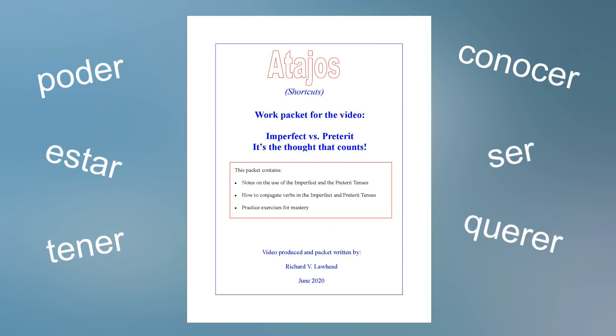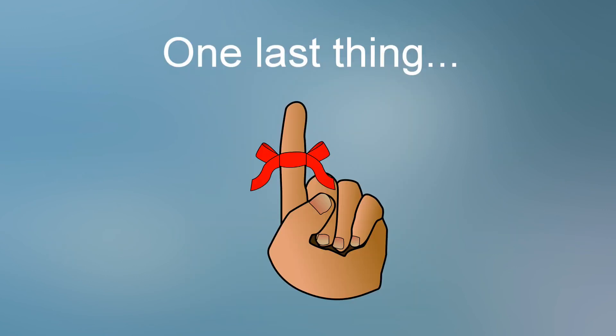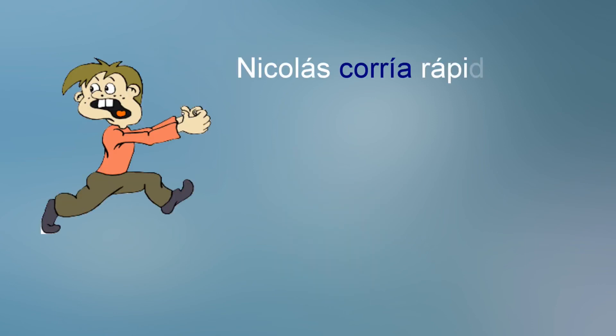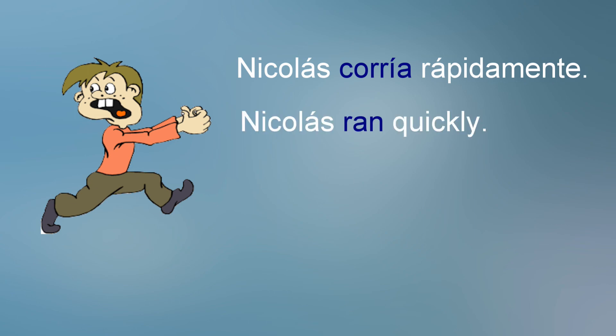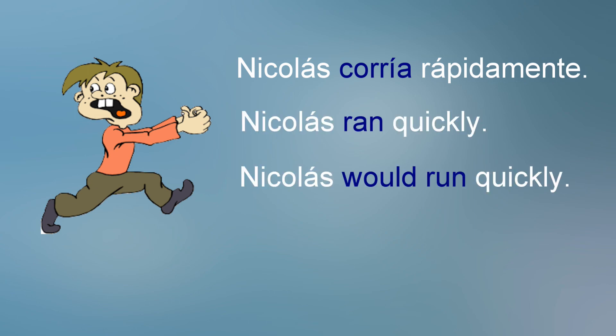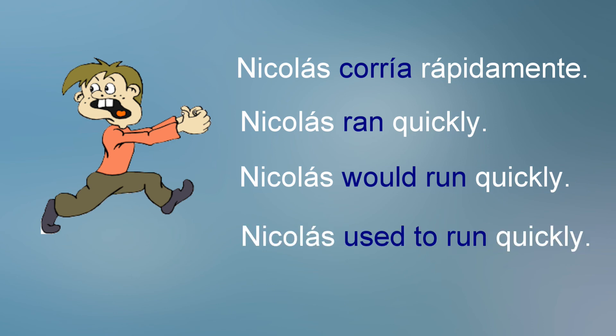One last thing. We saw earlier that the imperfect in Spanish can be interpreted in English in different ways. The phrase Nicolás corría rápidamente can be interpreted as 'Nicholas ran quickly,' 'Nicholas would run quickly,' and 'Nicholas used to run quickly.' All interpretations express the ongoing or repeated nuance of the imperfect tense. However, there is one more interpretation as well: 'Nicholas was running quickly.'